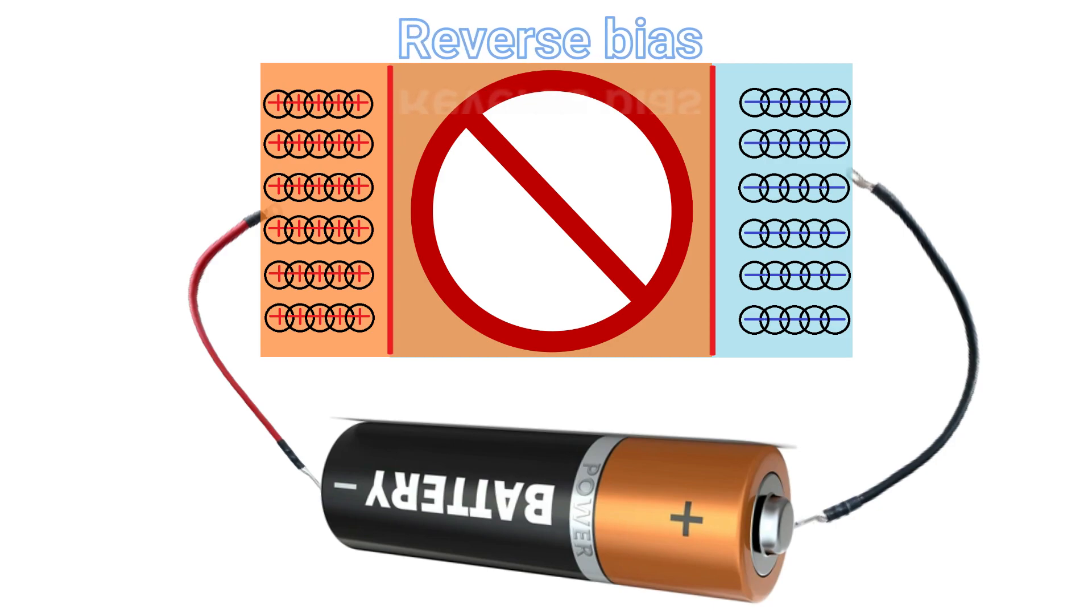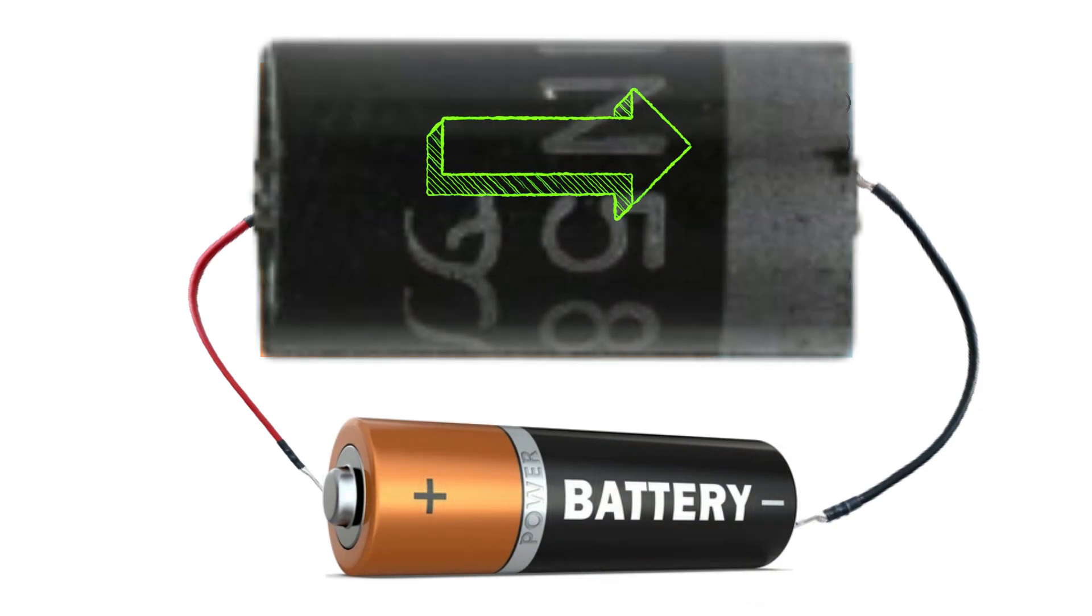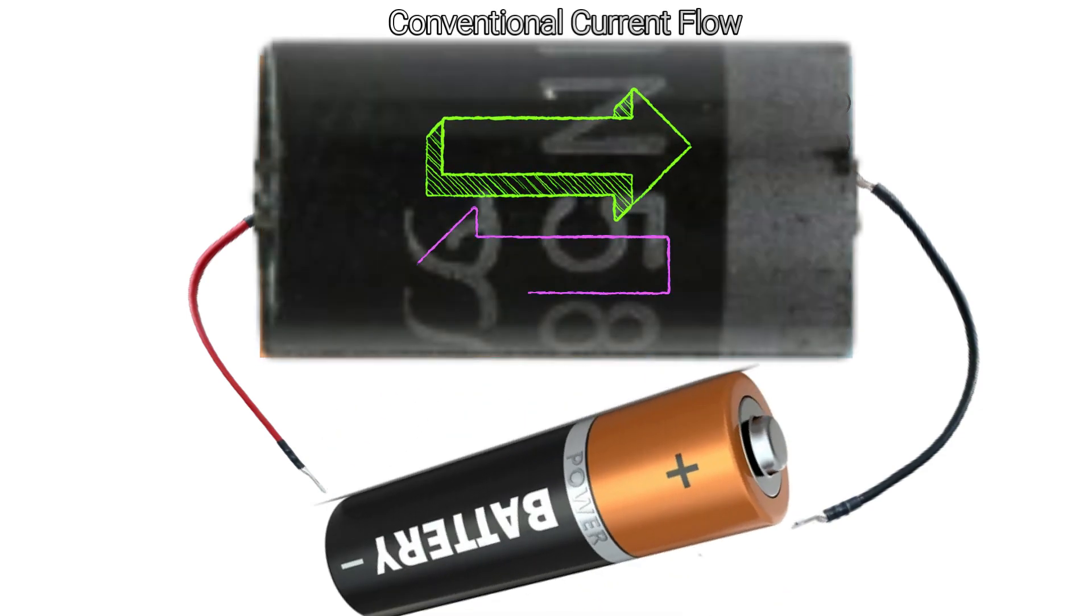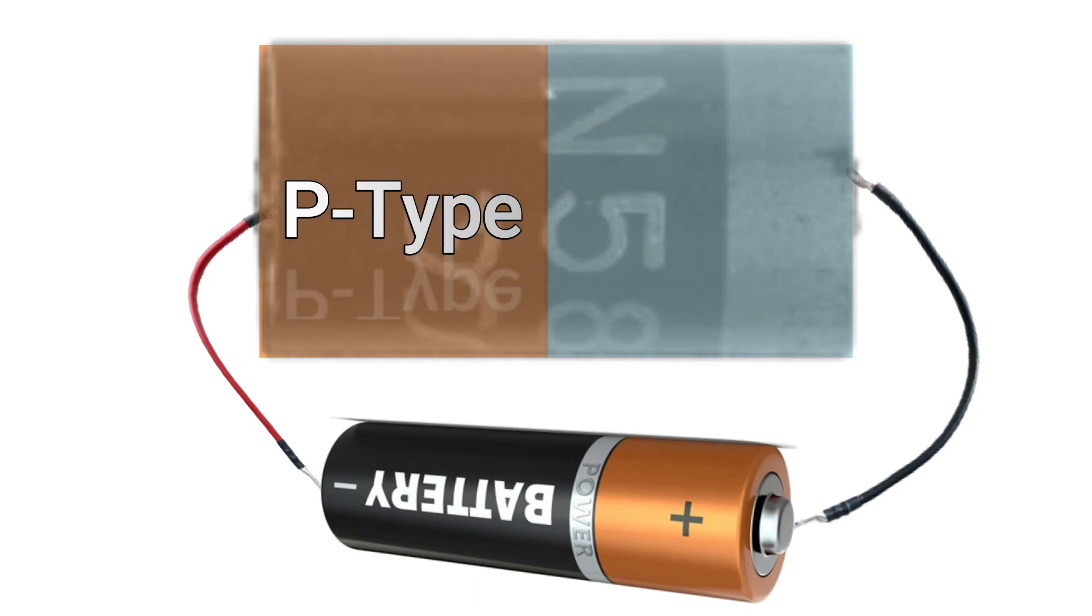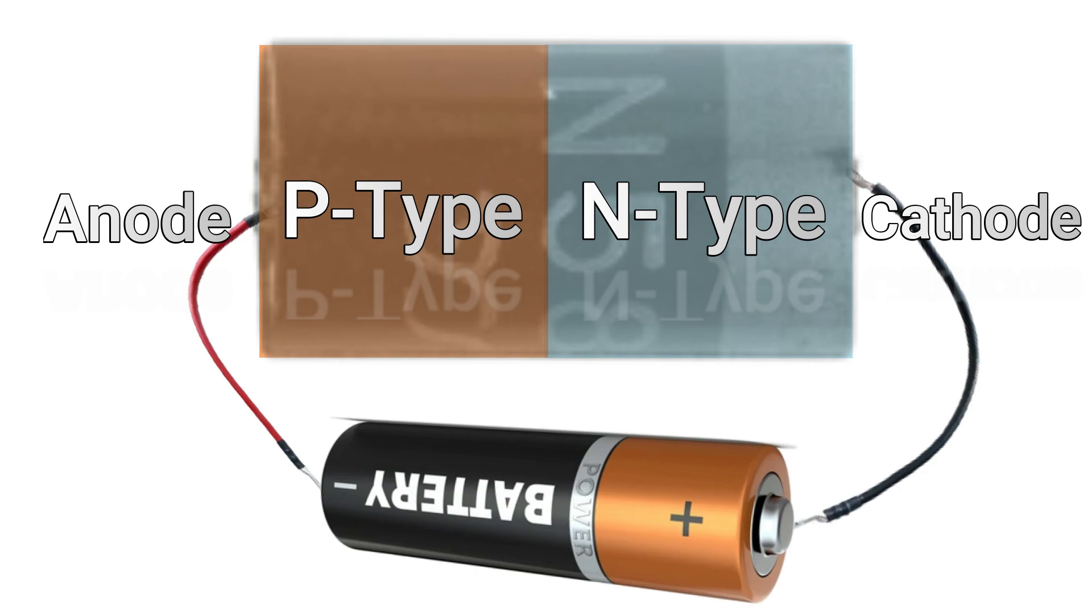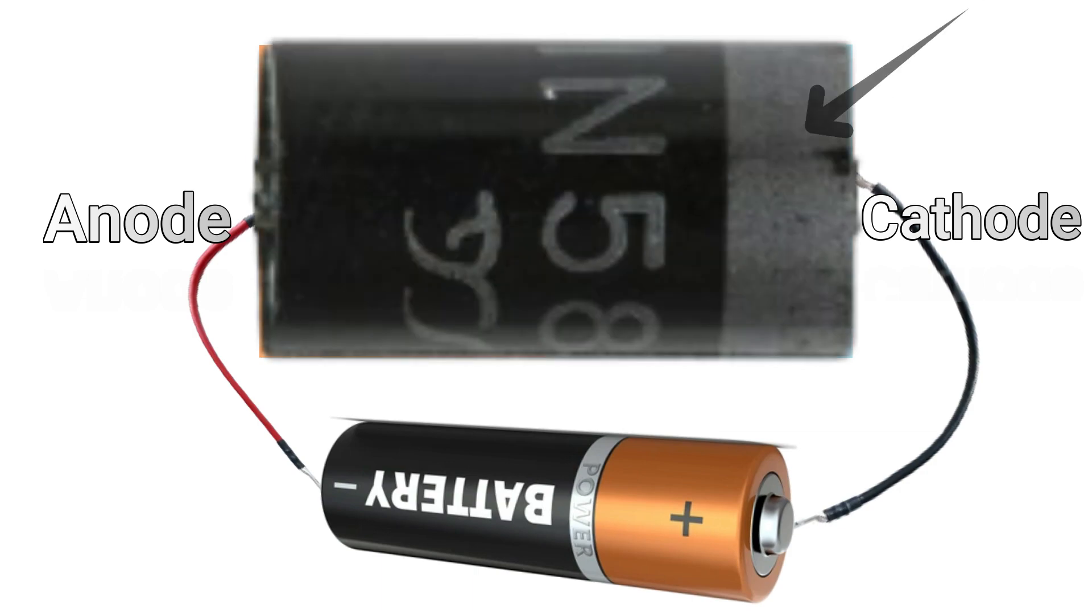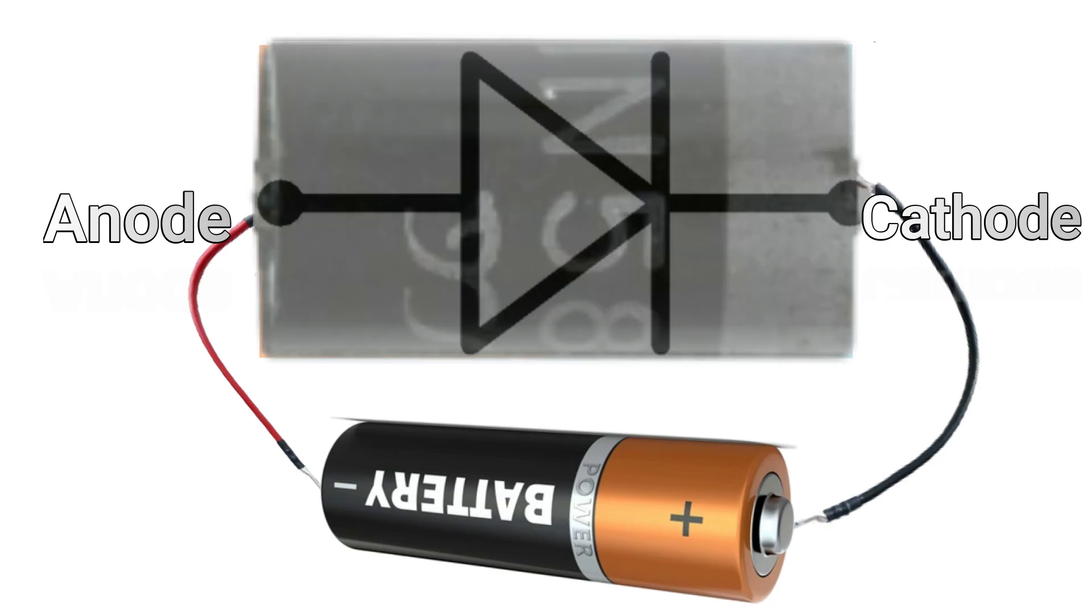Basically, this is why diodes conduct in one way and block the current flow in the other. The P-type semiconductor is the anode and the N-type semiconductor is the cathode. The cathode is marked with a line on the body of the diode and also in its symbol drawing.